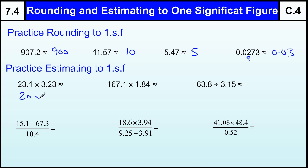Estimating these, we're going to do twenty times three, which is sixty. One hundred and sixty seven is going to be roughly two hundred times two, which would be four hundred. 63.8 to the nearest ten is sixty, divided by three, which is twenty.